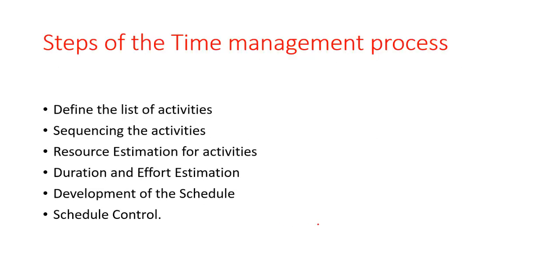We have different steps in the time management process. These are: first, define the list of activities; second, sequence the activities; third, resource estimation; fourth, duration and effort estimation; fifth, development of the schedule; and sixth, schedule control.